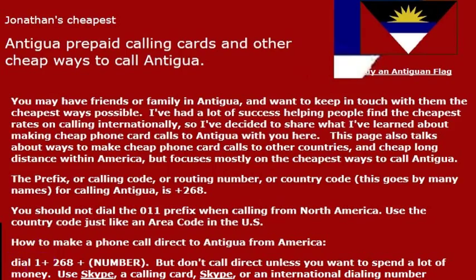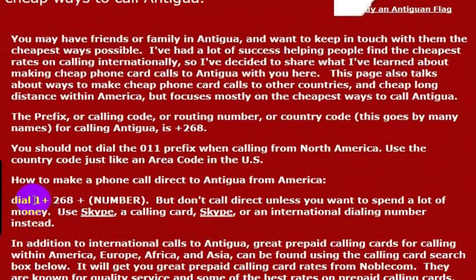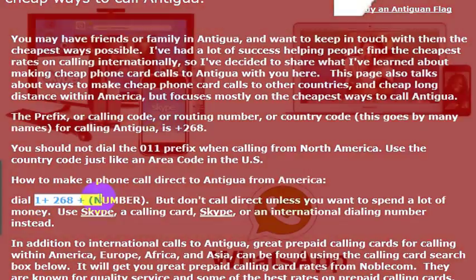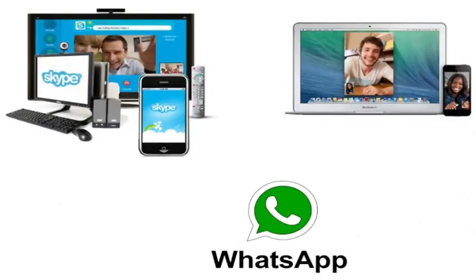But if you want to call them, it's just really important to remember these simple instructions for calling Antigua. All you have to do, if you're dialing from the United States, is dial like you're dialing any number in the US, which is 1268 and then the phone number that you're calling. But I would recommend using one of the suggestions that we walk through at the end of this video. Just remember that you can dial directly as well, but I wouldn't really recommend calling direct.